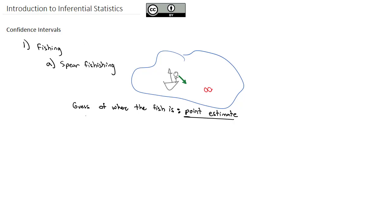is what we're going to call the point estimate. And the point estimate is very likely close to where the real fish is. But the truth is, if I throw this spear in the water, it's only going to hit one point, and I may miss the fish.